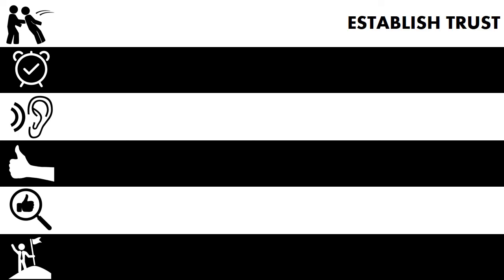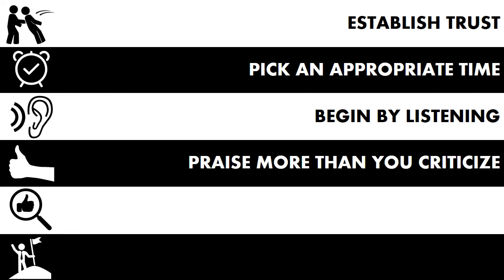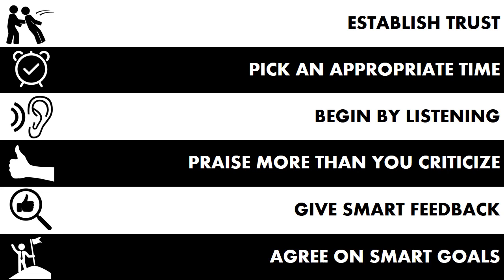Today we talked about giving effective feedback, and I gave you six characteristics: establish trust that you have the other person's best interests in mind; pick an appropriate time when they're emotionally capable of receiving feedback; begin by listening to their side of the story; praise more often than you criticize; give smart feedback so they understand exactly which behavior is the problem; and then agree on SMART goals so you give them a path forward to success. That's how you give effective feedback.